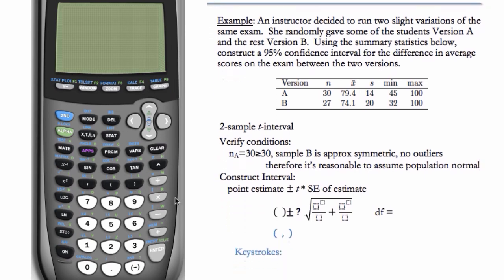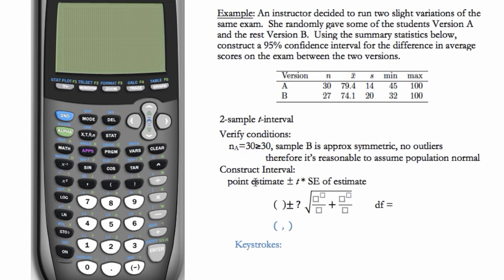So now we can construct our interval. We're going to do the point estimate, which in this case is going to be a difference, plus or minus t star and then the SE of the estimate. The SE is the more challenging part, but remember you don't have to memorize the SE formula.